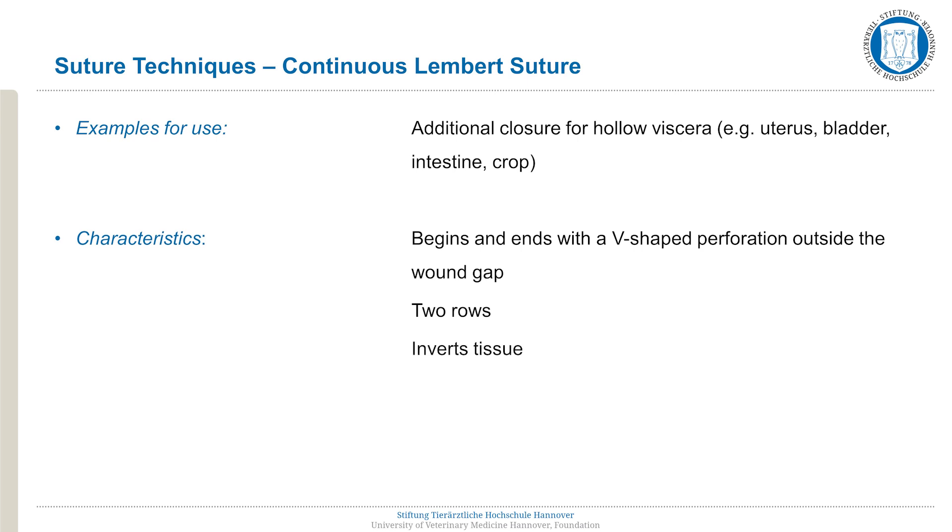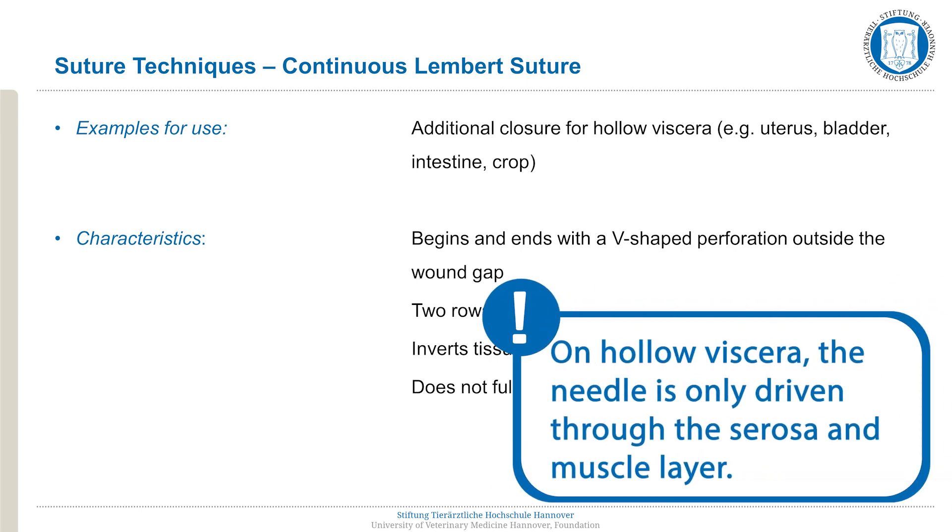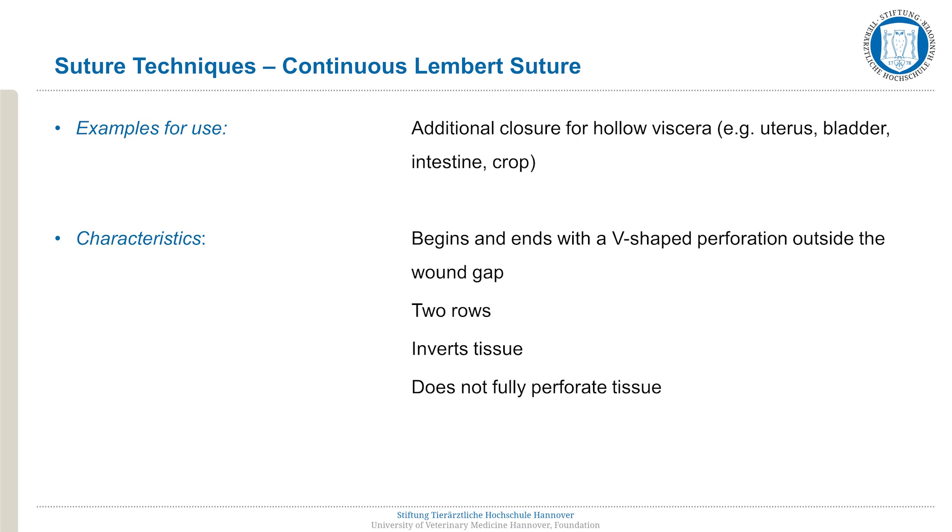In addition, this pattern inverts the tissue without fully perforating it. When suturing hollow viscera, it is vital that the suture remains exclusively in the serosa and muscle layer of the tissue. A perforation into the organ's lumen would create a wicking effect along the suture material, bringing liquid outside of the organ.